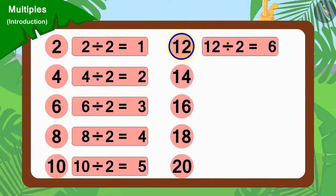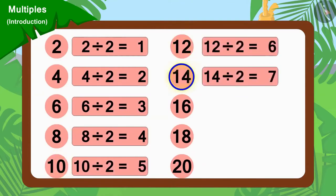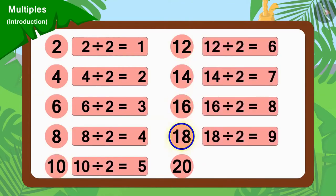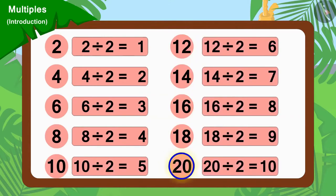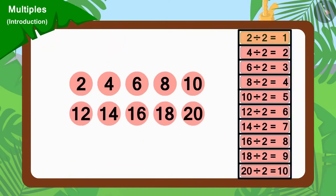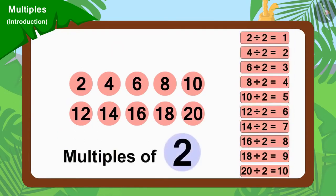Numbers that can be divided by 2 are multiples of 2. In this way, 2, 4, 6, 8, etc. are multiples of 2.